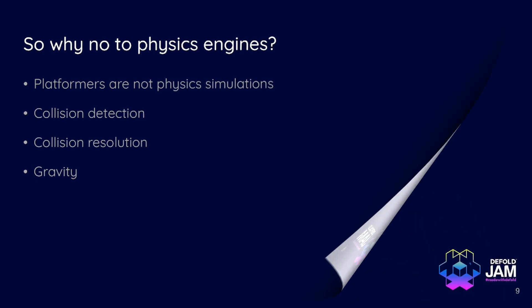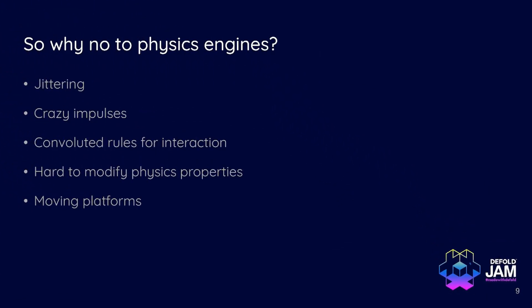I hope it makes sense. So things like jittering can happen or crazy impulses when your character suddenly jumps with a very high speed out of nowhere. Or some convoluted rules for interactions. For instance, it could be jumping platforms where you can jump on them from the top and from the bottom. So it's a one way jumping platform or hard to modify physics properties. For instance, when you want to change the size of your physics objects or instantly change its velocity or something like that. So it's hard to implement in Box2D and of course, moving platforms. Moving platforms could be a nightmare to implement in Box2D.